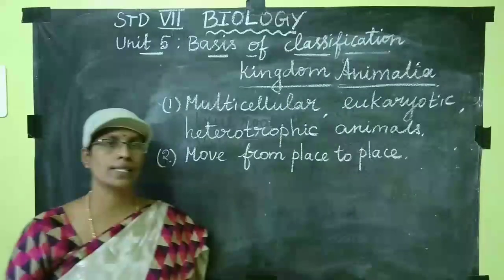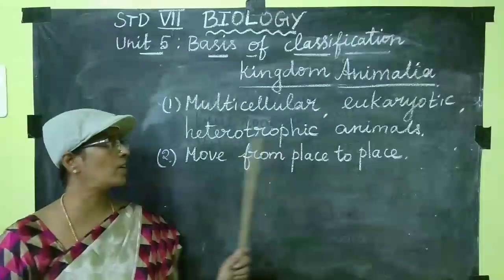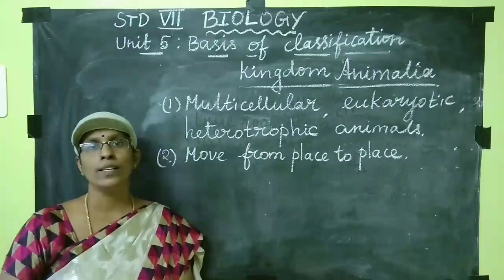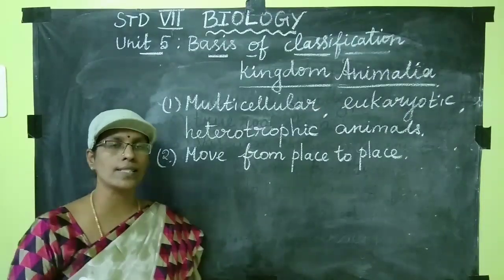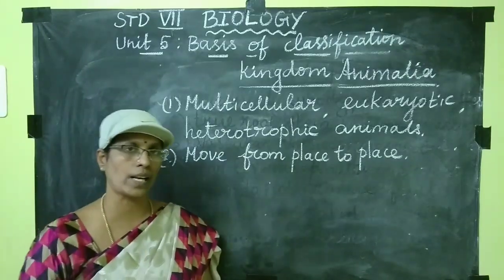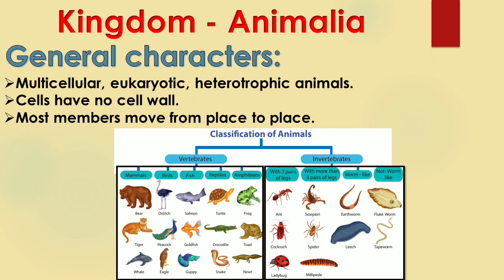Kingdom Animalia: animals are multicellular, eukaryotic, and heterotrophic. Cells have a well-defined nucleus and membrane-bound cell organelles. They depend on other organisms for food and most animals can move from place to place. Examples include invertebrates like sponges, hydra, flatworms, roundworms, insects, snail, and starfish; and vertebrates like fishes, amphibians, reptiles, birds, and mammals including human beings.